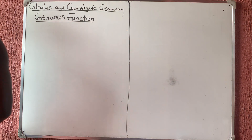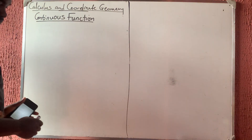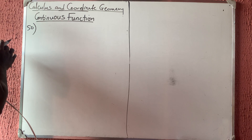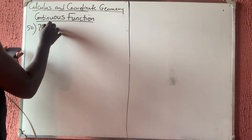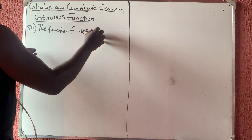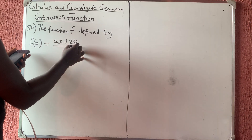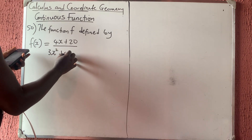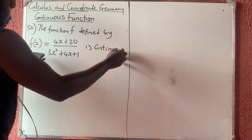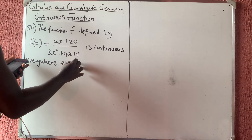Welcome back to my channel. In this video we'll be talking about continuous functions. I'll be solving a few questions from my workbook — question number 50. The function f defined by f(x) = (4x + 20) / (3x² + 4x + 1) is continuous everywhere except at certain points.